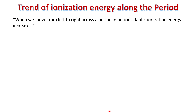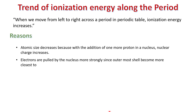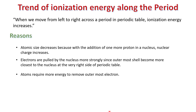When we move from left to right across a period in the periodic table, ionization energy increases. Atomic size decreases because with the addition of one more proton in the nucleus, nuclear charge increases. Electrons are pulled by the nucleus more strongly since the outermost shell becomes closest to the nucleus. At the very right side of the periodic table, atoms require more energy to remove outermost electrons, so ionization energy increases.